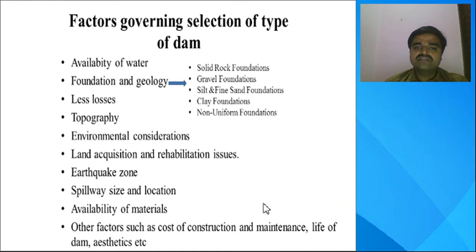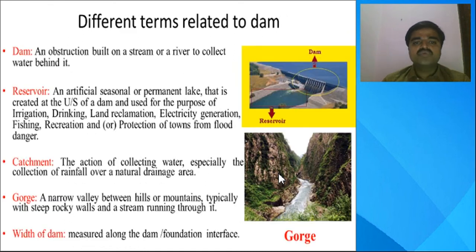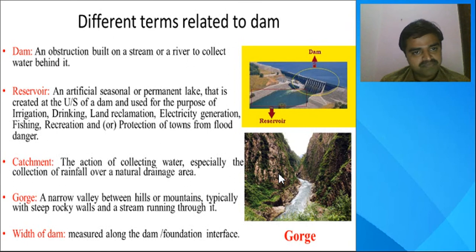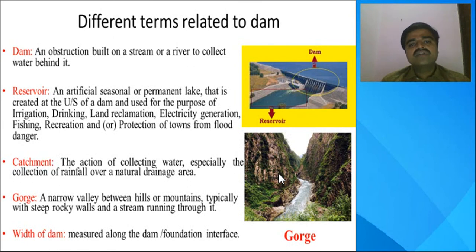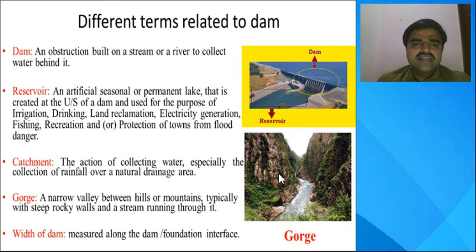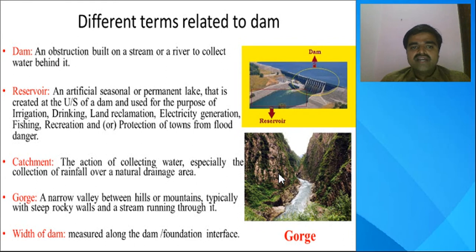These are some of the factors which govern the selection of the dam site. Next are the very important terms we need to correlate with the dam. Starting with the dam itself — it is an obstruction built on a stream or river to collect water behind it. This is the basic term used under the study of different types of dams.